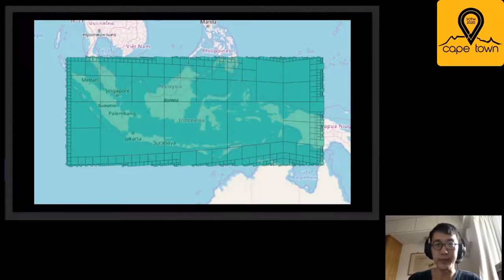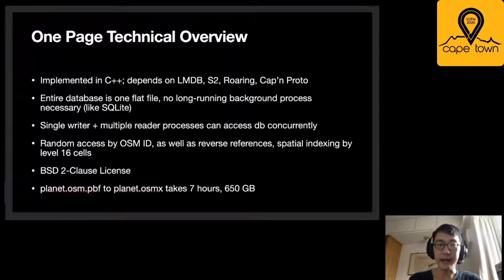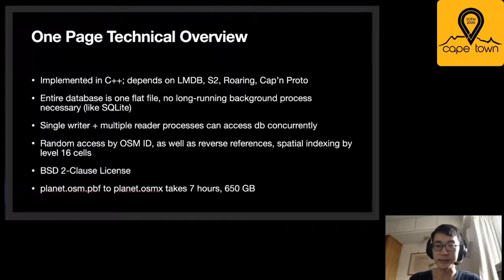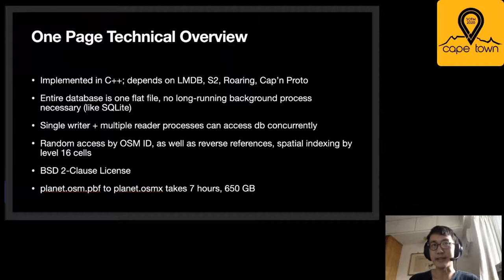A brief overview of other details: it's implemented in C++ and uses a bunch of popular libraries. The entire database is one file — there are no background processes like in Postgres. It's a lot more like SQLite. You can have one writer and multiple reader processes accessing it at the same time. It's a BSD 2-clause license, so if you want to statically link this into commercial projects that are not open source, that's fine. Converting planet.osm.pbf to planet.osmx takes about seven hours, is about a 10x expansion in storage size, and generally needs somewhere between 16 and 30 gigabytes of RAM.